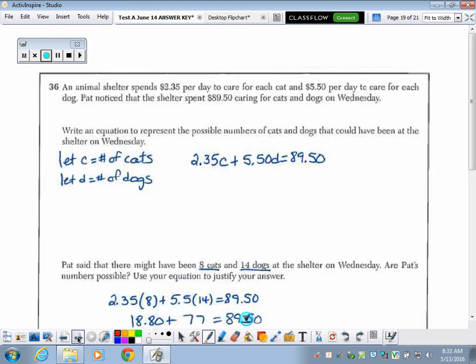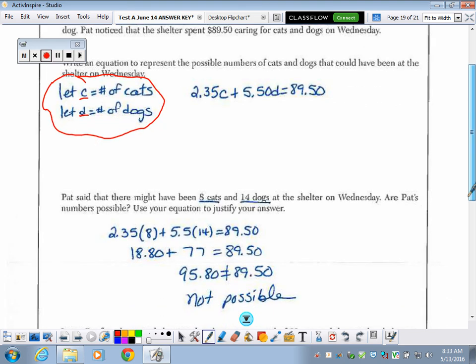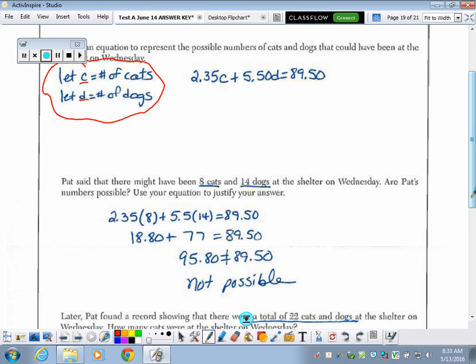Moving on to the next one. On number 36, we have done this problem before, folks. Unit 4, systems of equations. When they are talking about two unknowns, then you're going to have two let statements and you'll end up with two equations by the time you get to the bottom. So here they just asked you to write your first equation and you did well with that. Several people did not have let statements. Please add those to your paper. The next part, they wanted to know if there were eight cats and 14 dogs at the shelter, would that be possible? Use your equation to justify your answer. So you're just using the equation from above. You're subbing in the eight and the 14. And you got, some of you got down to this point. You got down to here and you stopped and you said no. Or you didn't say no and you just stopped.